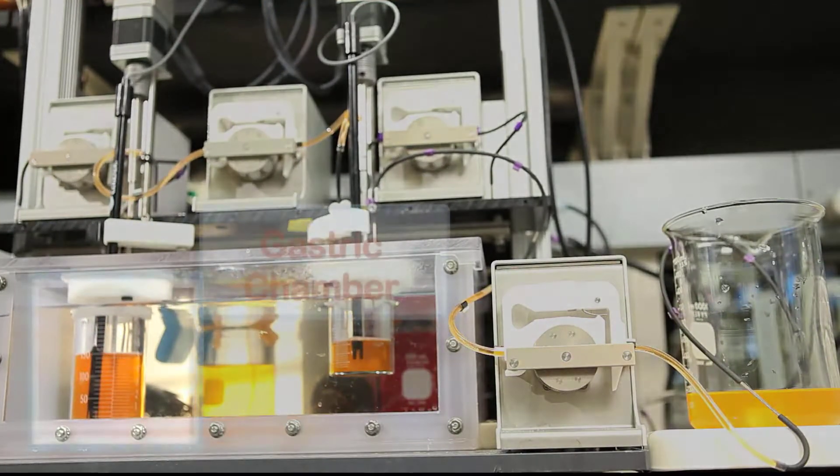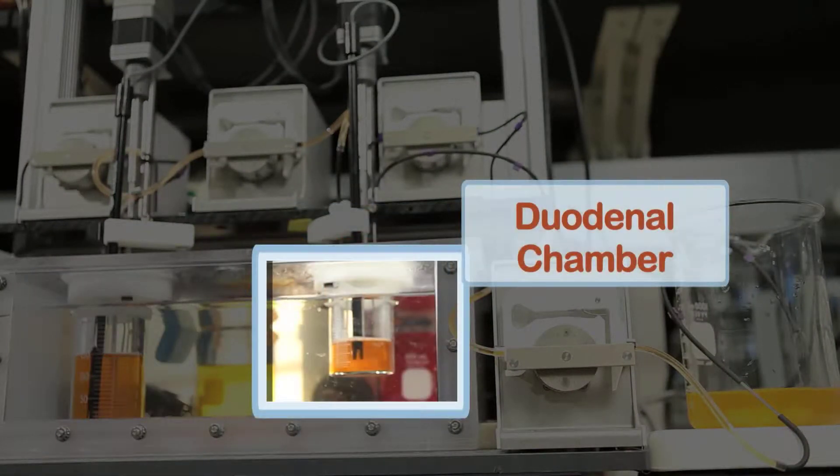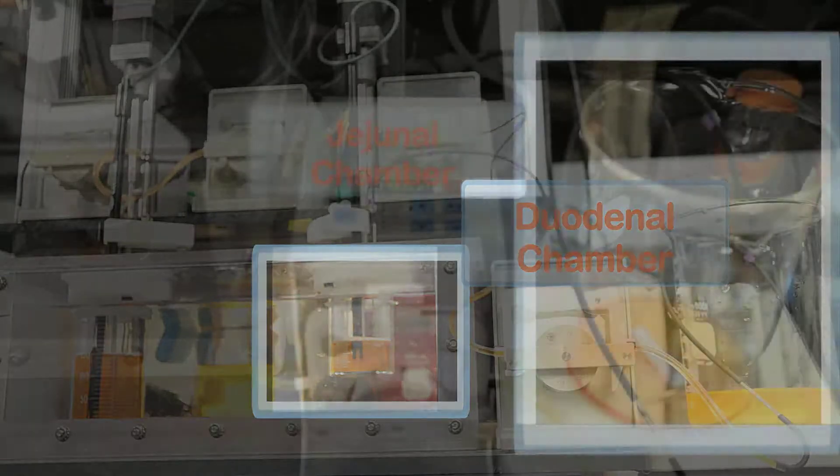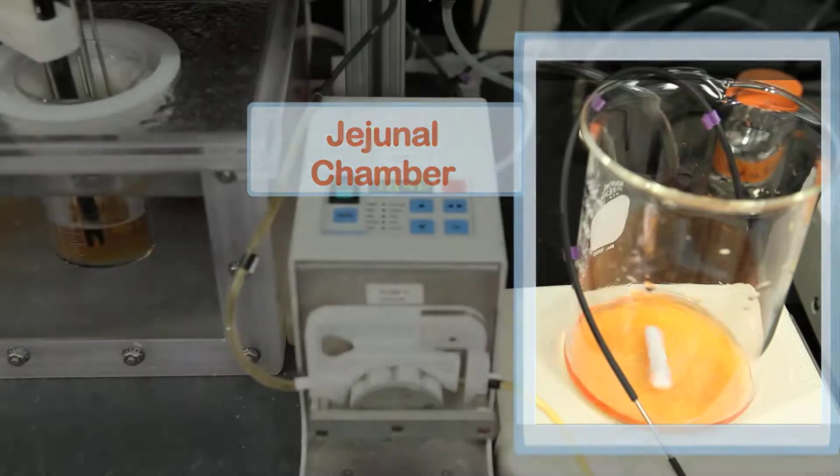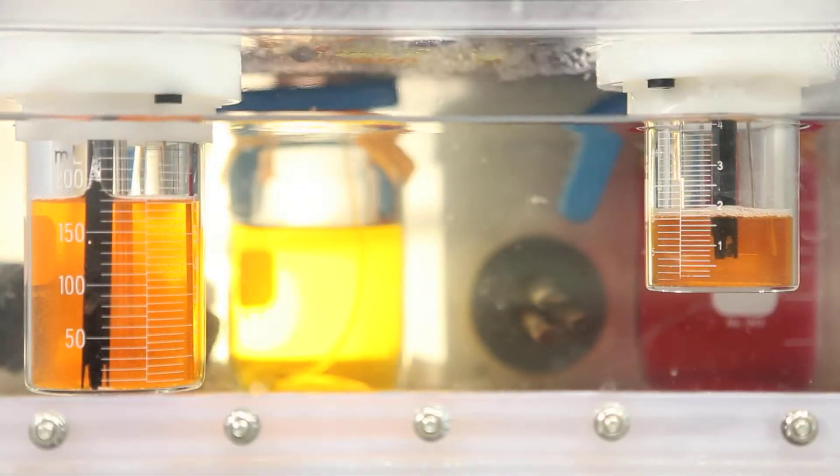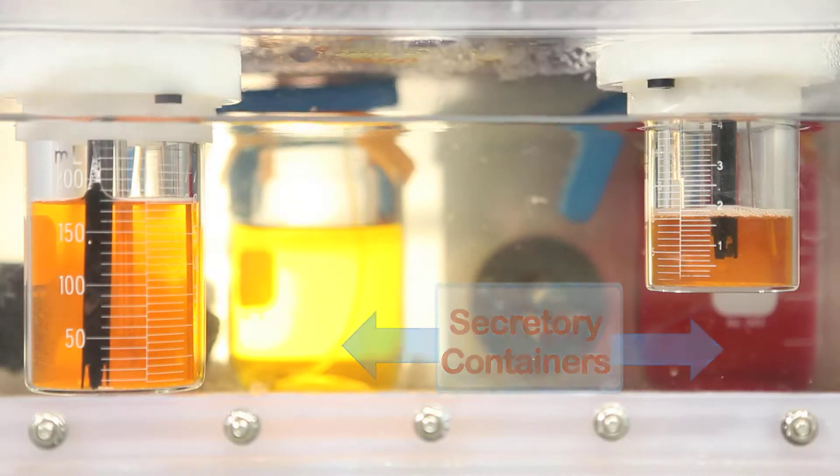The GIS consists of three separate chambers: a gastric chamber to represent the stomach, a duodenal chamber to represent the proximal small intestine, and a jejunal chamber to represent the proximal to mid small intestine. In addition to these three chambers, two additional containers are present to hold secretion fluids that are pumped into the gastric and duodenal chambers during the experiment.